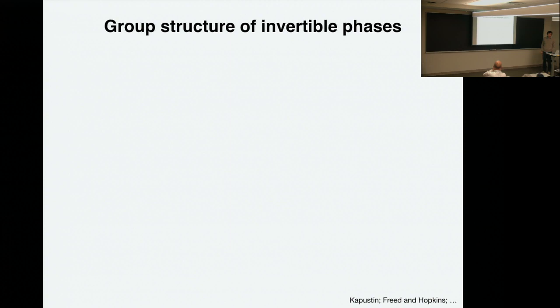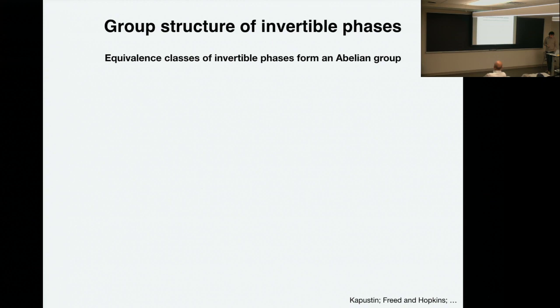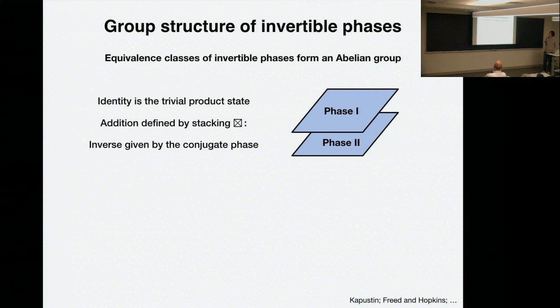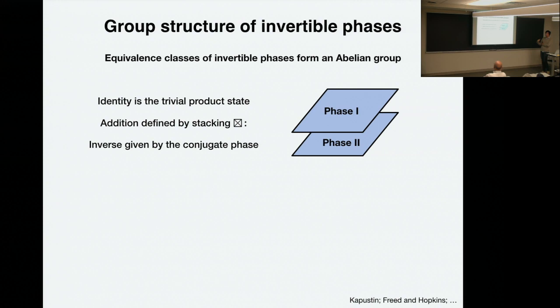It's also well-known and important that there's a nice group structure for invertible phases. The statement is that equivalence classes of all these invertible phases form an abelian group. The group structure is given by stacking — the identity of the abelian group is just a trivial product state, and you can stack two phases on top of each other, which gives you the addition operation in the group.